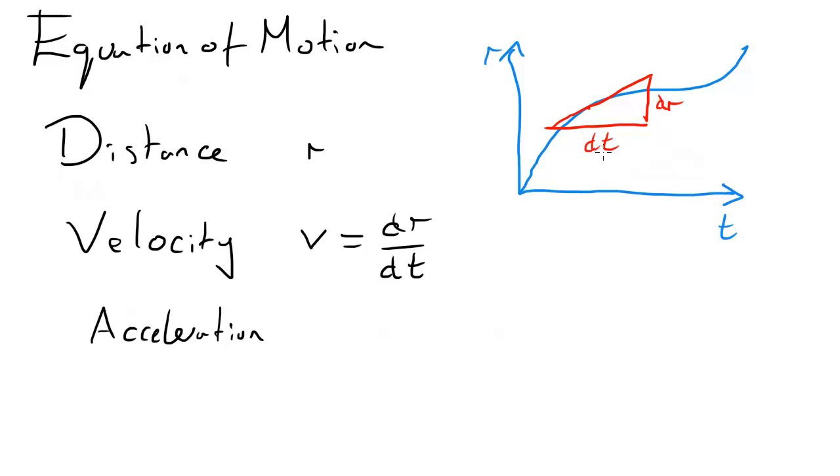So you do dr over dt, and this gives us the function of distance velocity, which is very useful. And in some books you may see it written as r dot, which just is exactly the same, just the dot means the rate of change of whatever's below.